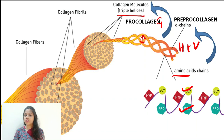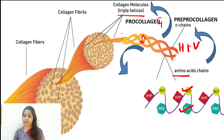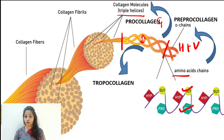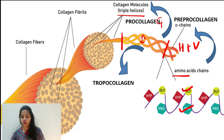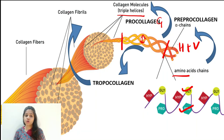At the level of pro collagen, the chains leave the cell via exocytosis, and along with that there is proteolytic cleavage, meaning the terminal ends get cut off to form tropocollagen. Pro collagen is soluble and present within the cell, whereas tropocollagen becomes insoluble and is present in the extracellular space. Tropocollagen then undergoes covalent bonding to form collagen fibrils, which further bundle up to ultimately form collagen fibers.